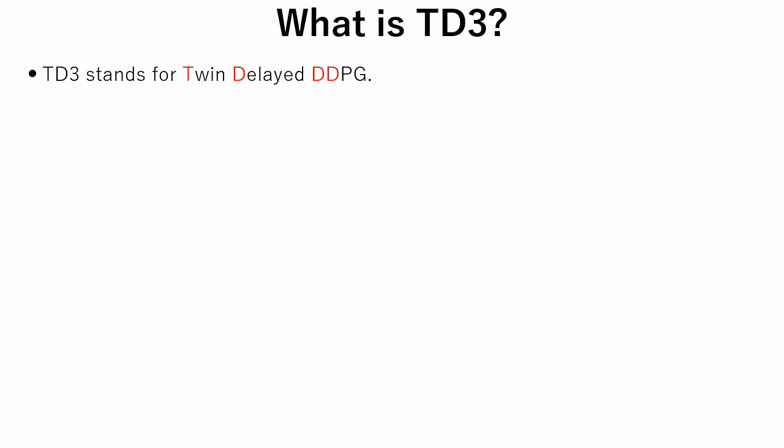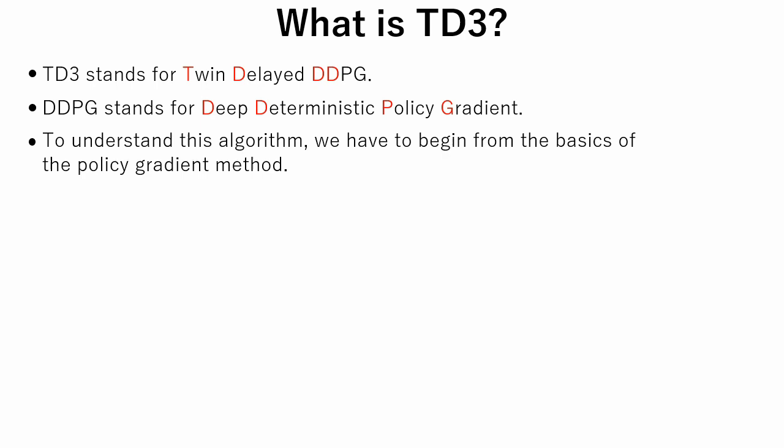TD3 stands for Twin Delayed DDPG. And DDPG stands for Deep Deterministic Policy Gradient. TD3 is a relatively recent method and it is based on previously developed algorithms. So, in order to understand how it works, we should begin from the basics of the policy gradient method.